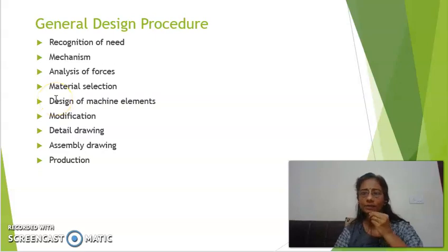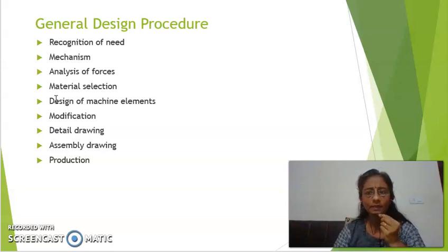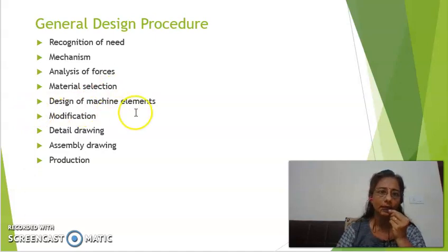Next we are going to study today, that is general design procedure. For any component need to be designed, we are going to follow general design procedure. So which are all steps which we will be following: recognition of need, mechanism, analysis of forces, material selection, design of machine elements, modification, detail drawing, assembly drawing and production. So let us see one by one.